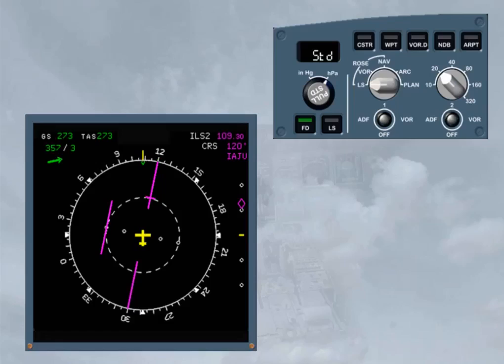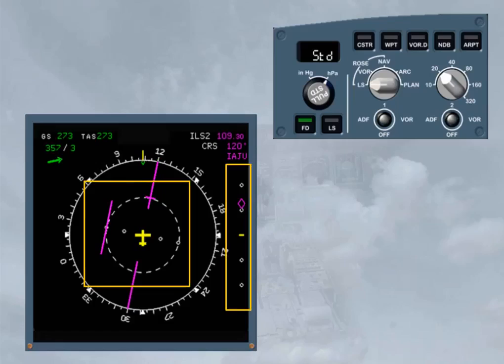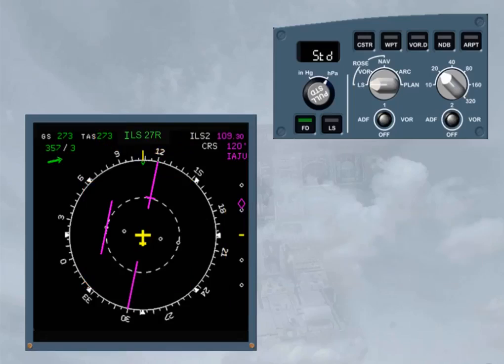The Rose ILS mode is a raw data mode, providing standard localizer and glide slope deviation bars. Note, the full runway name of the MCDU selected approach will be displayed if, in the related FMS phase, the along track distance to destination is less than 250 nautical miles. Other information is displayed to assist you: an ILS course pointer and ILS information.